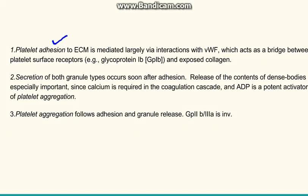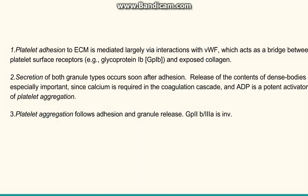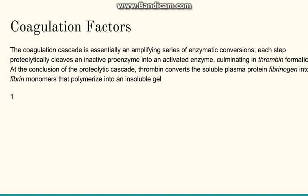To recap the platelet steps: first is adhesion, where glycoprotein Ib and von Willebrand factor interact. Then is secretion, especially of calcium and ADP, which leads to aggregation. Finally, aggregation occurs with the help of glycoprotein IIb and IIIa. This was the role of platelets.